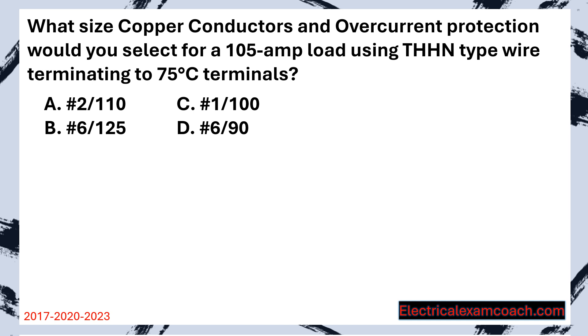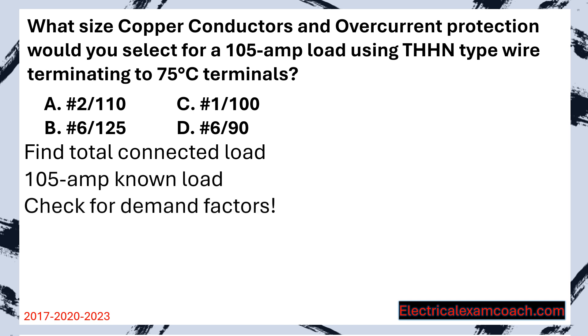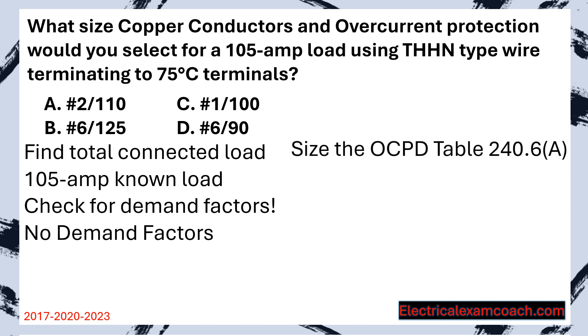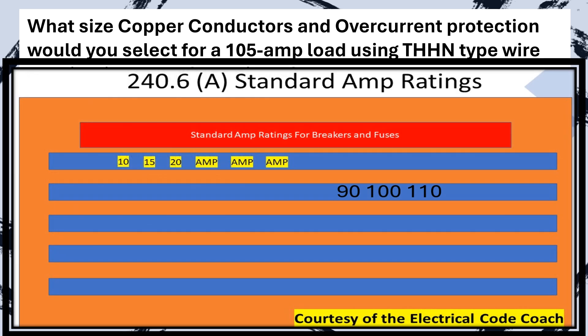What size copper conductors and overcurrent protection would you select for a 105 amp load using THHN type wire terminating to 75 degrees C terminals? Step one: find the total connected load — 105 amps, but we must check for demand factors. It doesn't mention a specific type of equipment or how many hours it's running, so there are no demand factors. We size our overcurrent protective device using table 240.6A. This is why it's very important to always go to the table and not just go off memory or what you might do in the field — out in the field you might say this needs to be on a 125 because 125 is a common number.